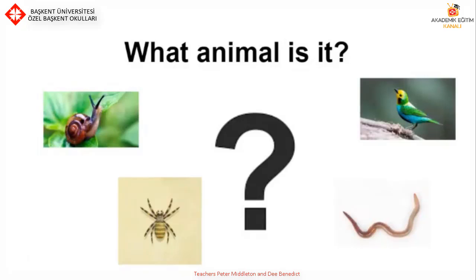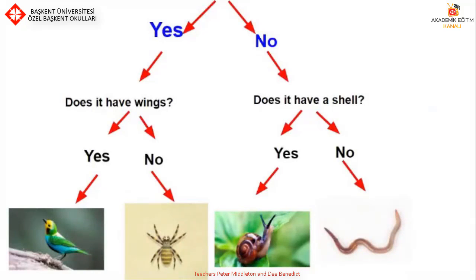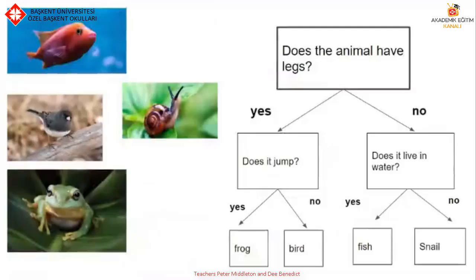Let's look at these animals. Can you name them? Which of these animals have legs? Does the animal have legs? Yes or no? And does it have wings? Yes or no? If you said no, does it have a shell? Yes or no? You can see these animals are sorted under yes or no for these questions. We can make an identification key with yes/no questions using body parts like wings and shell, with different animals as the answers. Can you make an identification key for different animals with yes or no questions?